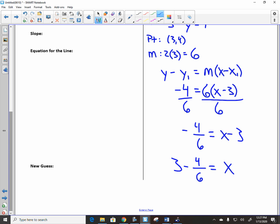And you get 3 minus 4 over 6. Folks, that's my new guess. What is 4 over 6? 2/3, right? And if you take 3 minus 2/3, you get 2.3 repeating, right? Based off of what we had, 2.3 repeating is a lot better guess than the 3 was originally.